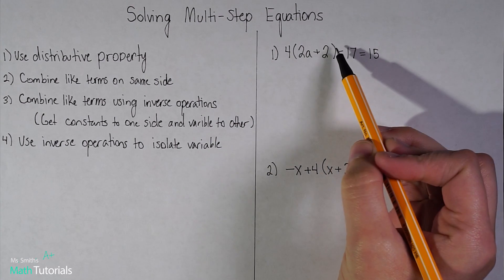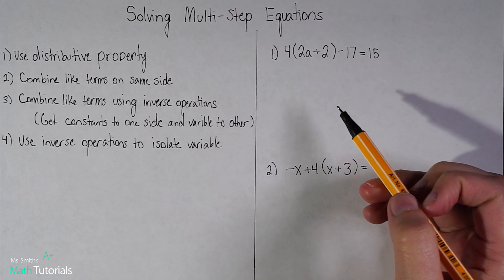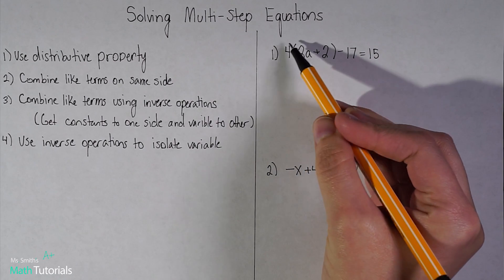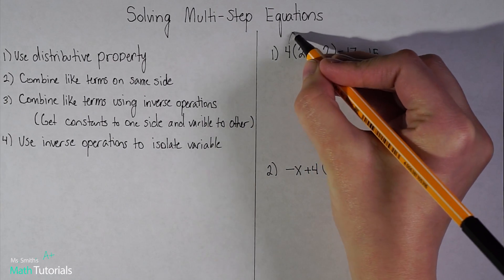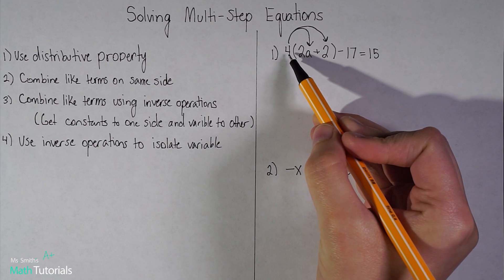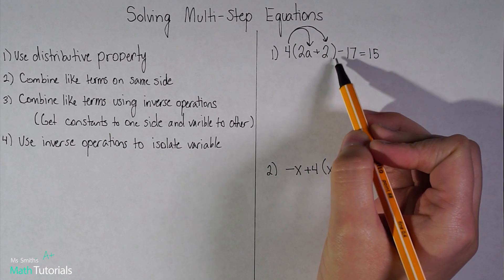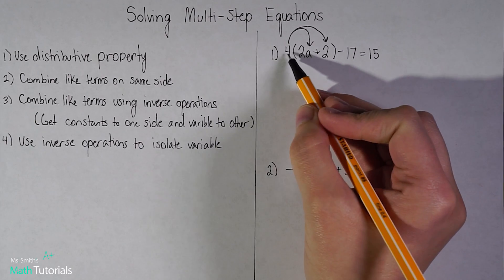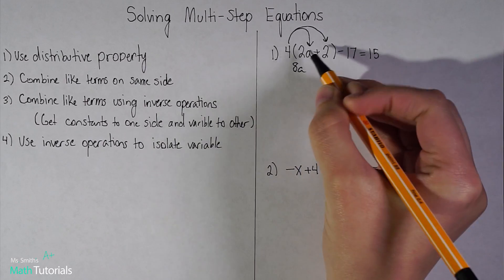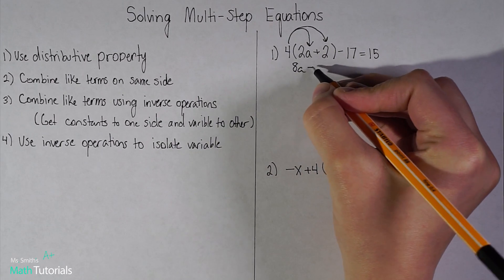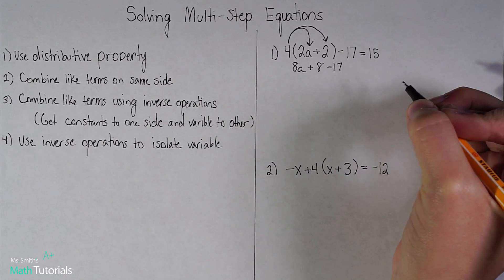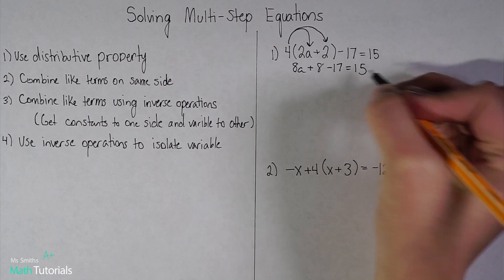I clearly see there's a set of parentheses right here. We learned back in some of my last videos about the distributive property — anytime we have something in front of the parentheses we have to distribute it throughout the entire parentheses. Notice I'm not distributing that 4 to the negative 17, because that negative 17 is not included in the parentheses. 4 times 2a gives me 8a, and 4 times positive 2 gives me positive 8. I'm going to bring down the negative 17 and the equals 15.